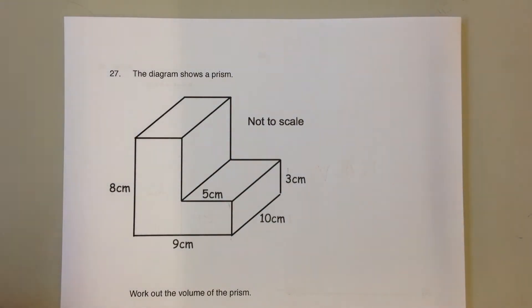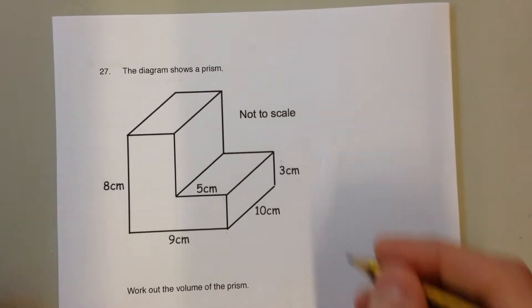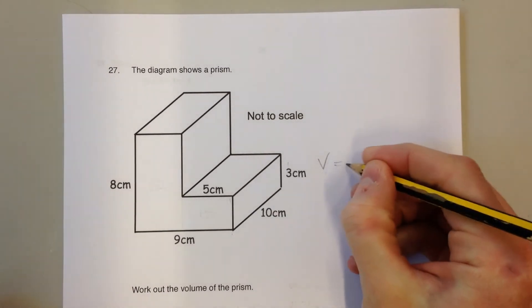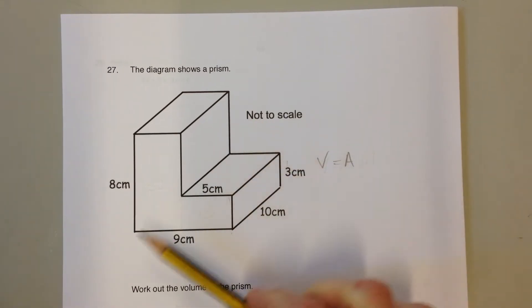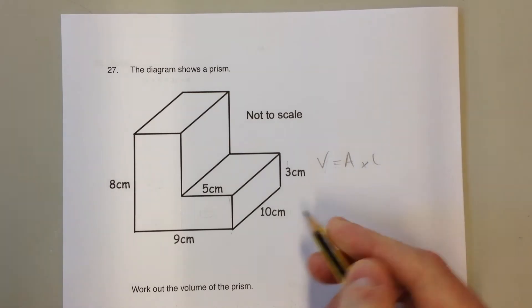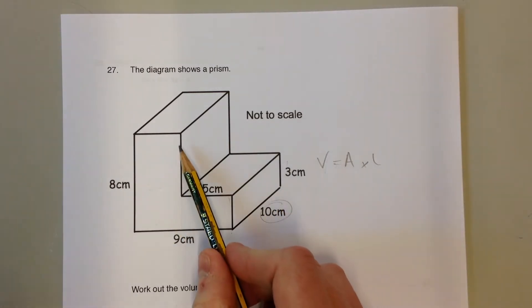To find the volume of this prism, we need to find the area of the cross section, which is the shape that's repeated all the way through. In this case, that's an L-shape. We need to multiply by the length of the prism, which is 10 centimeters in this case.